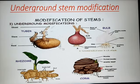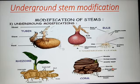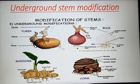This one is a corm. It is a short, vertical, underground stem which is fleshy and solid, and contains food reserves. The example of corm is colocasia.